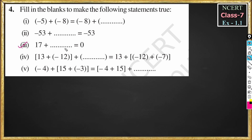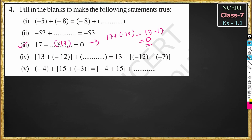Question 3: 17 plus dash is equal to 0. We know that if we add a number's additive inverse, the result is 0. So 17 plus minus 17 equals 0, because 17 minus 17 equals 0. Therefore the answer is minus 17.